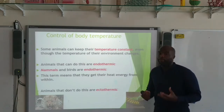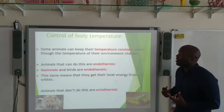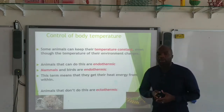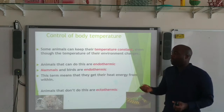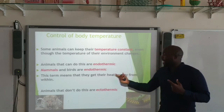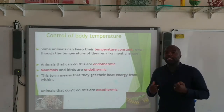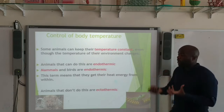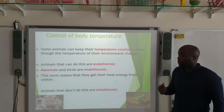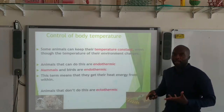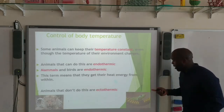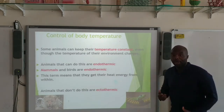Some animals can keep their temperature constant themselves. Animals that can do this are known as endothermic animals — these include mammals and birds. This means that they can generate their heat energy from within. If an organism cannot do this, they're known as ectothermic. For example, this leopard is endothermic — it can maintain a constant temperature from within. And this snake is ectothermic.